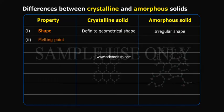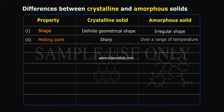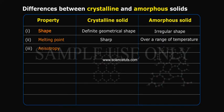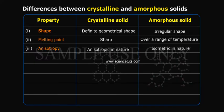Property 2: Melting point. Crystalline solid has a sharp melting point. Amorphous solid melts over a range of temperature. Property 3: Anisotropy. Crystalline solid is anisotropic in nature. Amorphous solid is isotropic in nature.